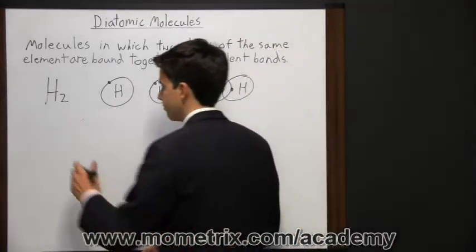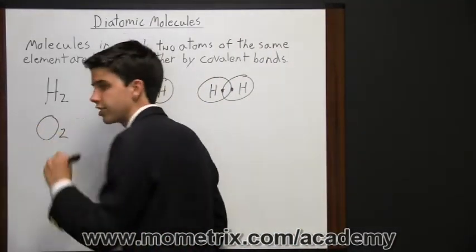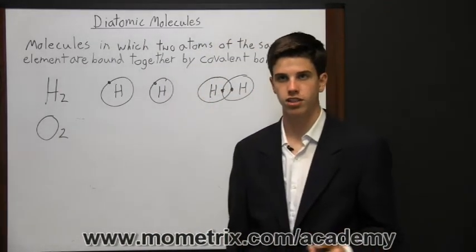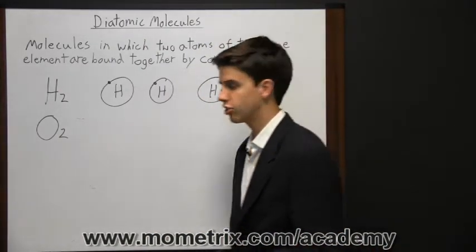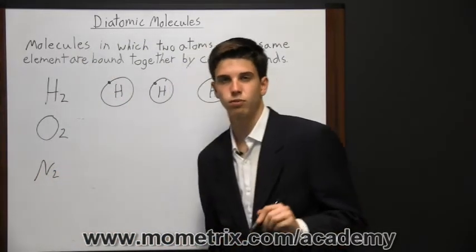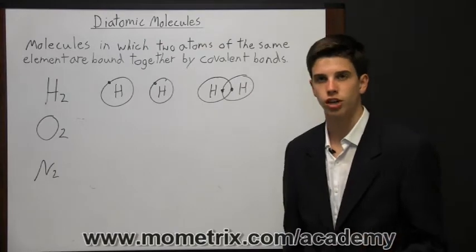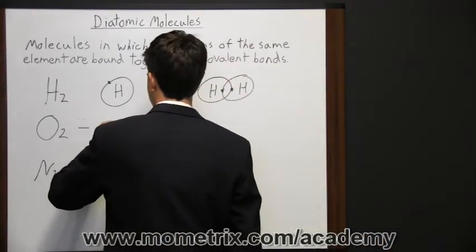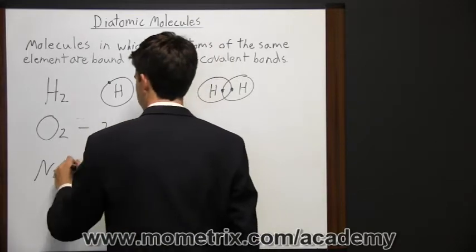An oxygen molecule is formed when two oxygen atoms share two pairs of valence electrons between them, and nitrogen is formed when two nitrogen atoms share three pairs of valence electrons. So here you have two pairs, and here you have three pairs.